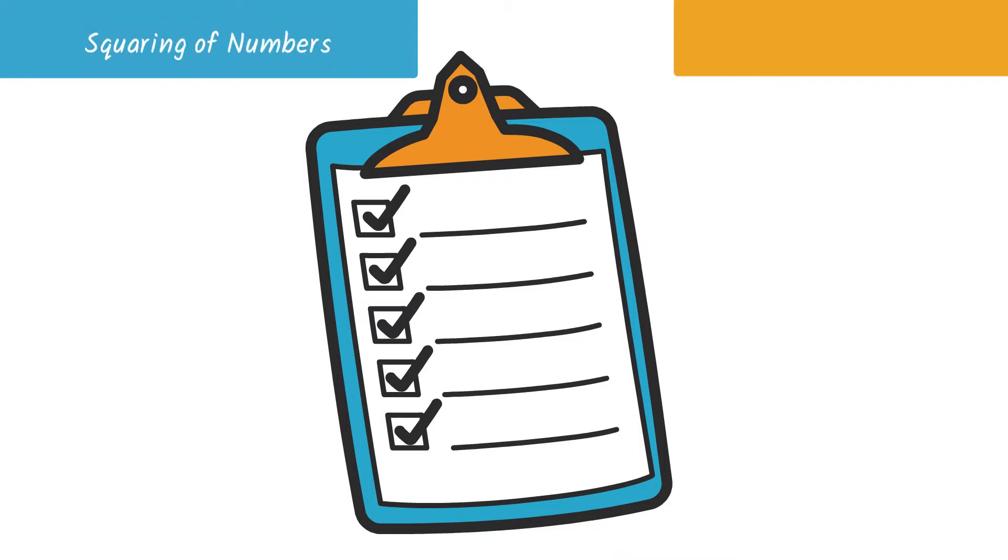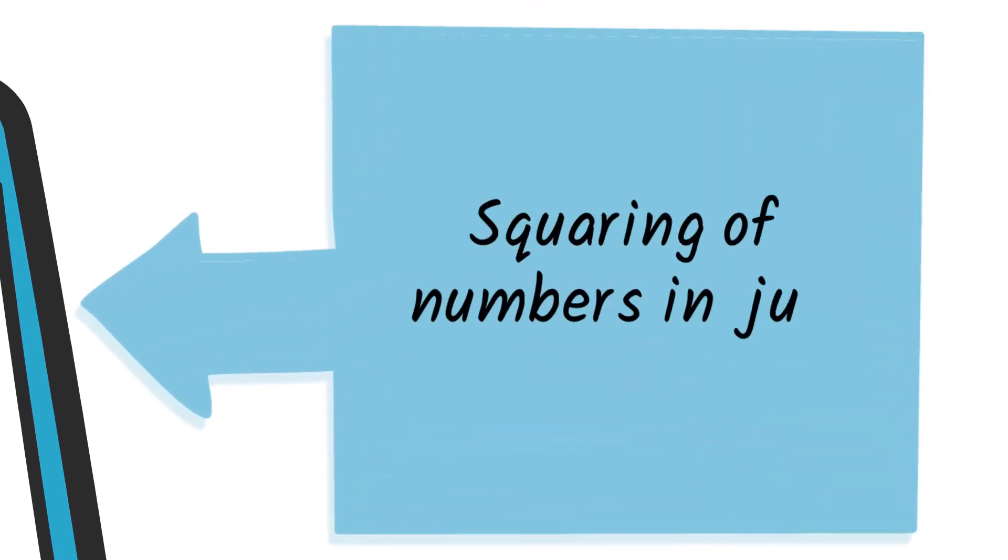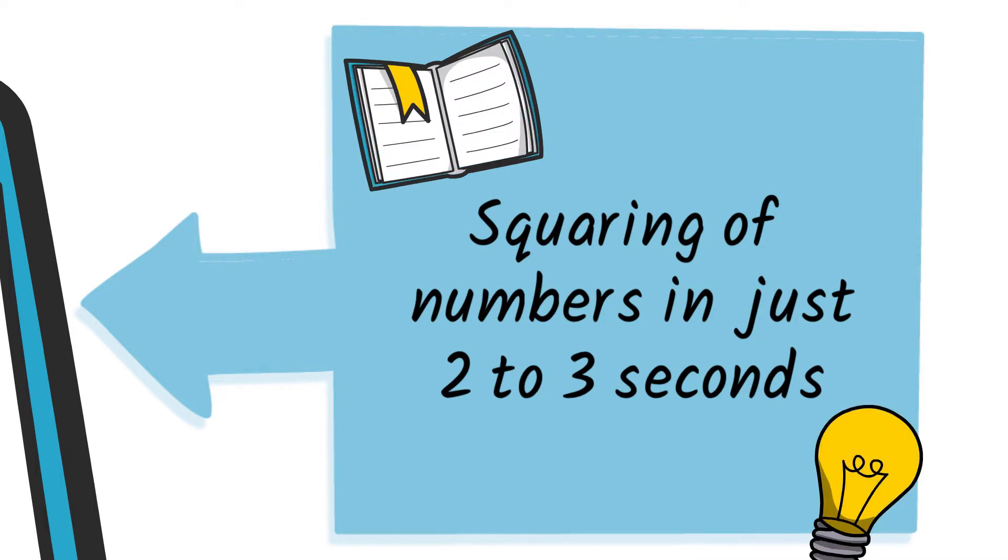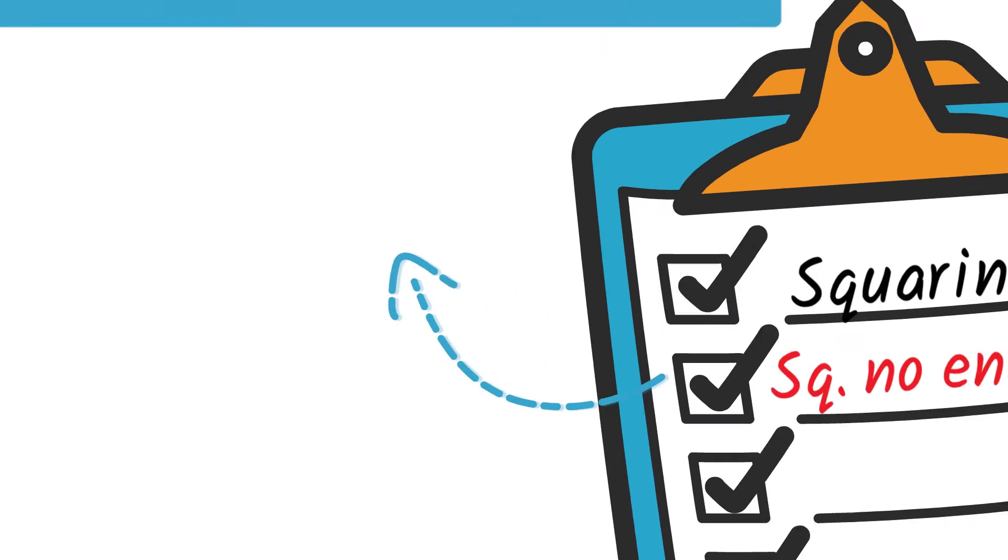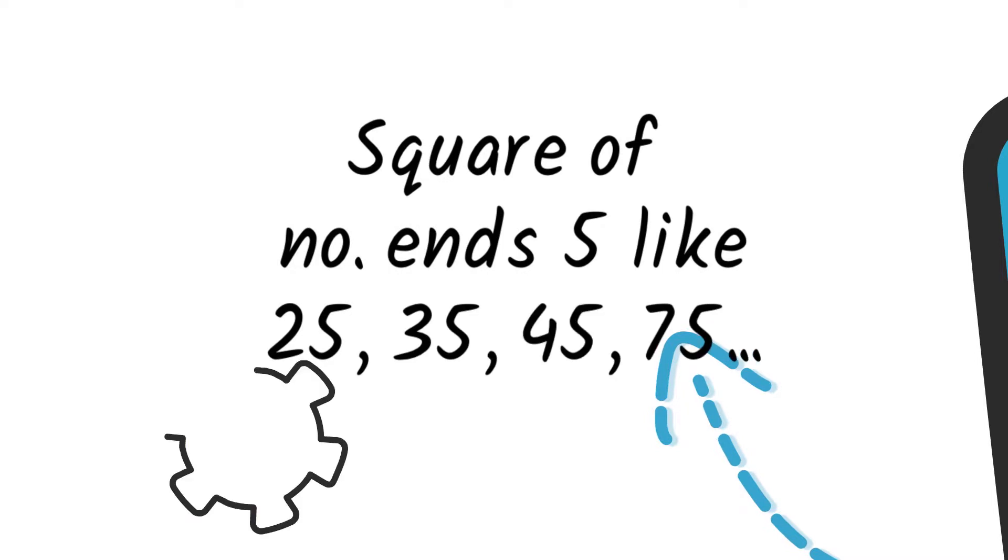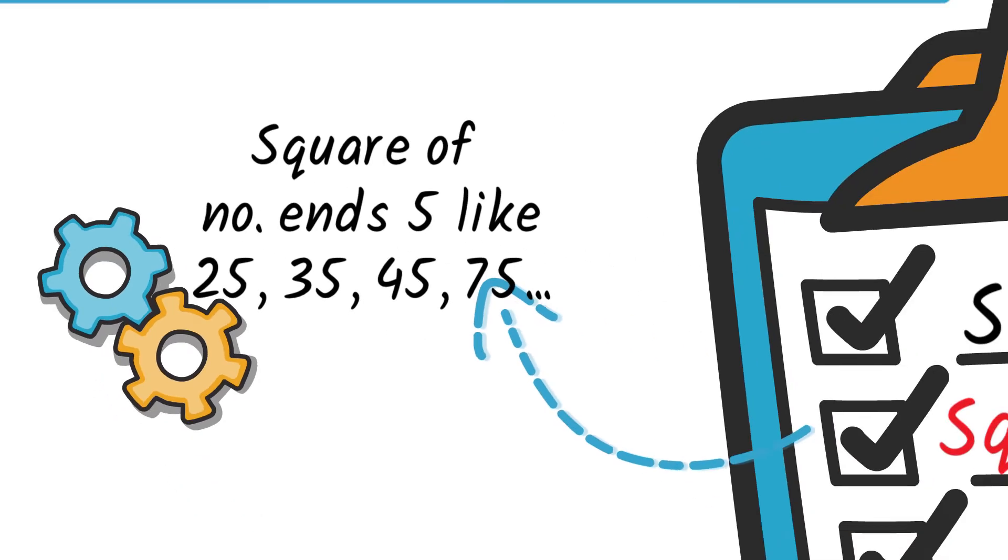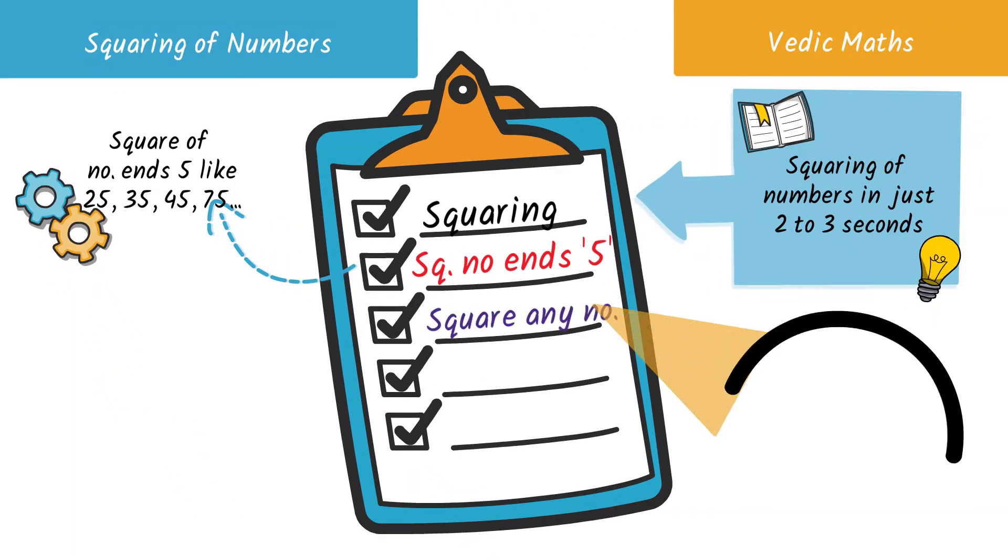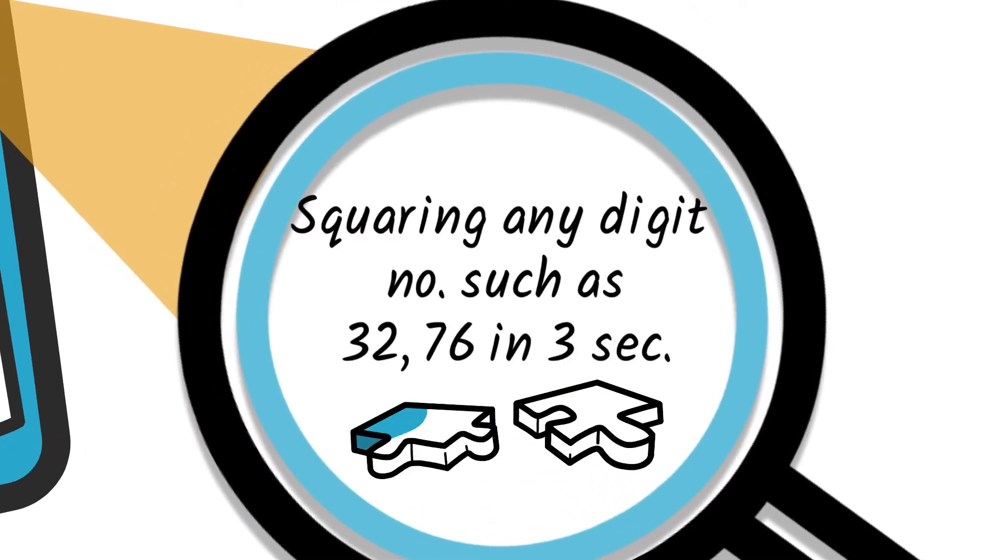Hello friends, in this video we will learn squaring of numbers with the help of Vedic math. Squaring of numbers in just 2 to 3 seconds. First, we will understand the square of numbers ending with 5, like 25, 35, 45, 75, and so on. Second, we will understand squaring of any two-digit number such as 32, 76 in 3 seconds.